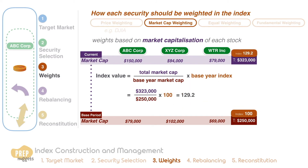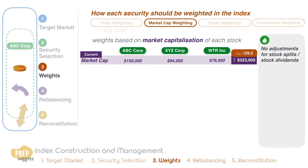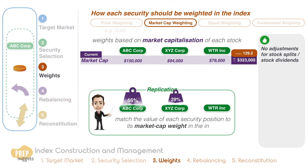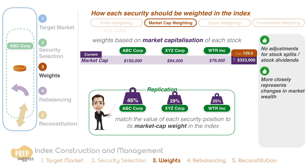One benefit of a market cap-weighted index is that it does not need to be adjusted when a stock splits or pays a stock dividend. This is because the market cap of a stock is not affected by stock splits or stock dividends. To replicate the returns of a market cap-weighted index, a portfolio manager should match the value of each security position to its market cap weight in the index. This weighting method more closely represents changes in aggregate investor wealth in the entire market than price weighting.